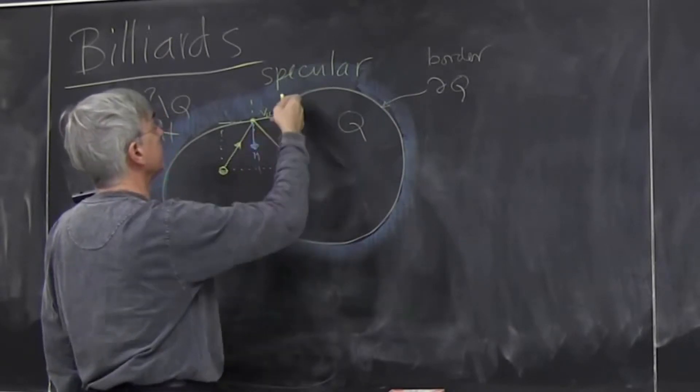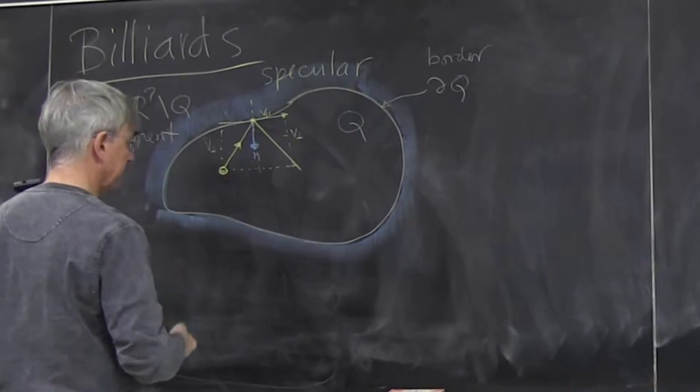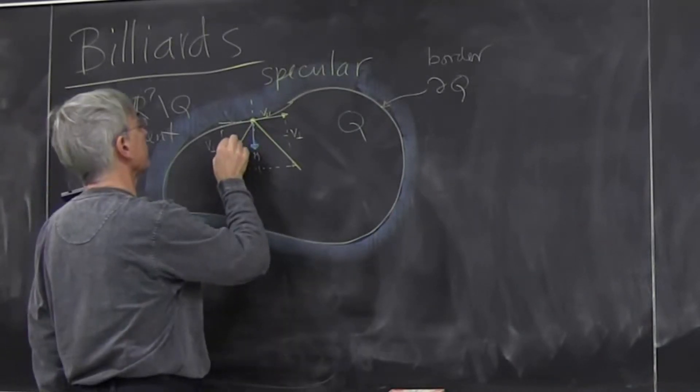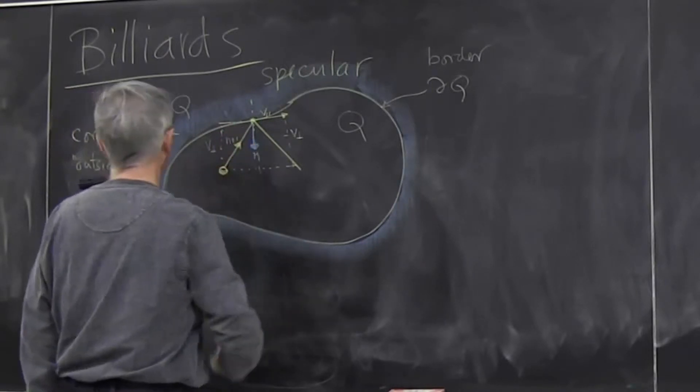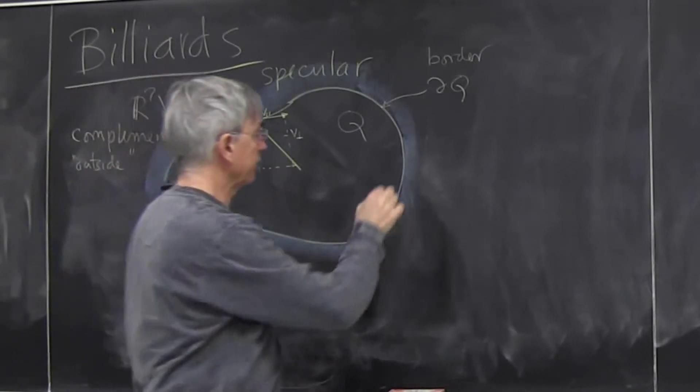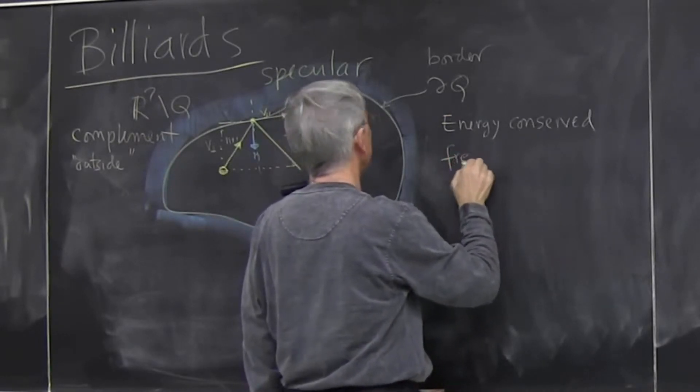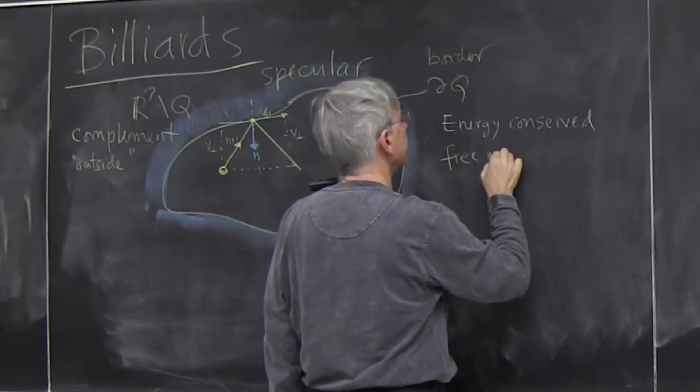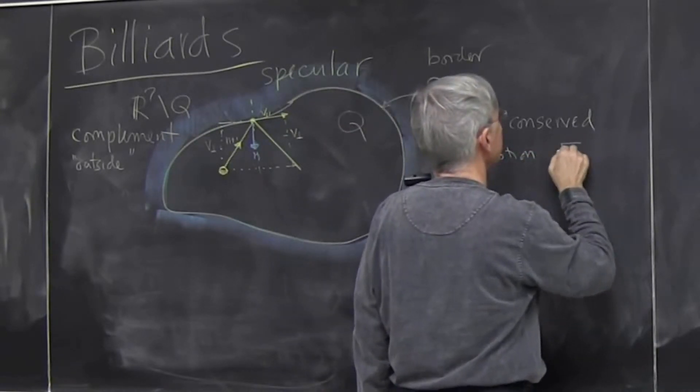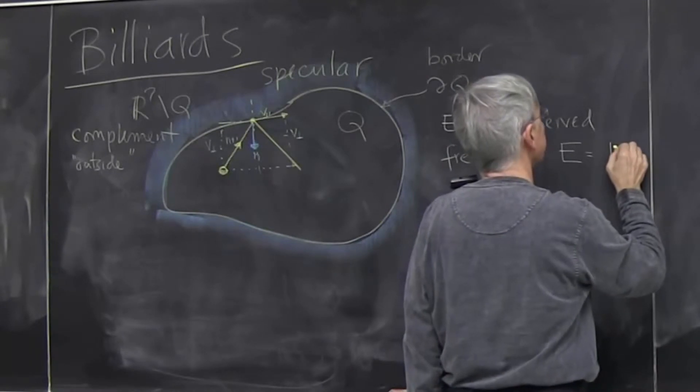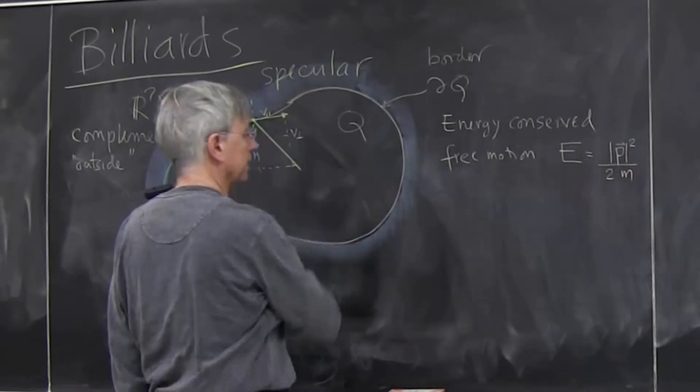The perpendicular component just gets reversed. So we can write this as a formula. We can say that if this is velocity or momentum at time n plus one, we'll assume energy conservation, we assume free motion in between collisions.